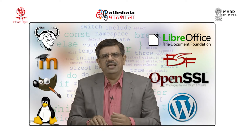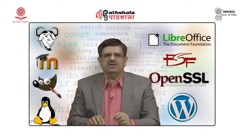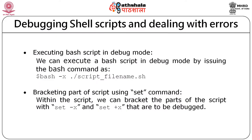Now let us move to another concept: debugging shell scripts. While writing scripts you may encounter errors — for example, a spelling mistake causes a 'command not found' error. One way to deal with errors is to execute the script in debug mode by running: bash -x filename. This executes the program with the bash command along with the -x option and the file name, running the entire program in debug mode.